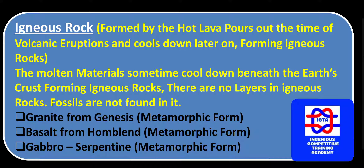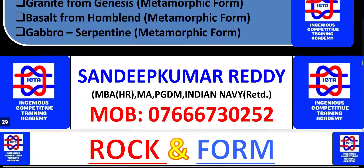All igneous rocks are formed from hot lava from volcanoes. Granite comes from gneiss — gneiss is the metamorphic form of granite. The granite we use in our homes for layouts comes from gneiss, which is the metamorphic form. Basalt comes from hornblende, which is the metamorphic form of basalt. Similarly, gabbro comes from serpentine, which is its metamorphic form. So granite, basalt, and gabbro each come from different rocks. These are very important examples to remember.